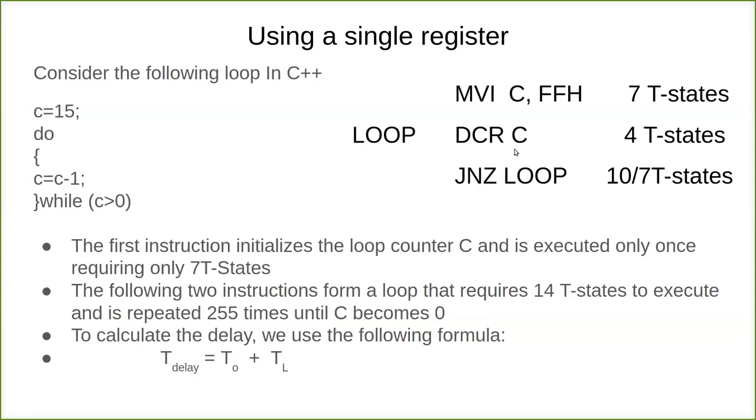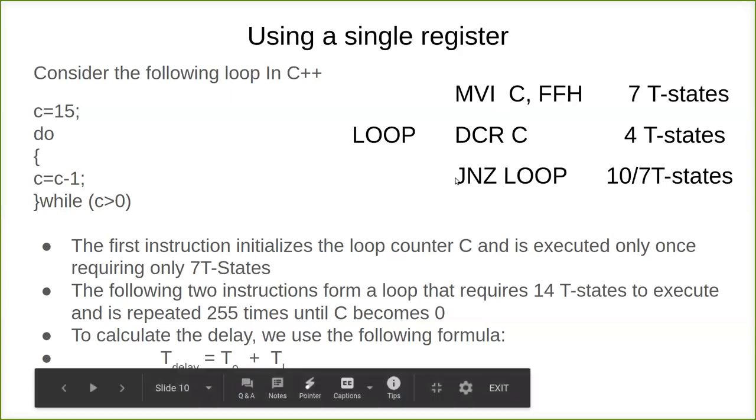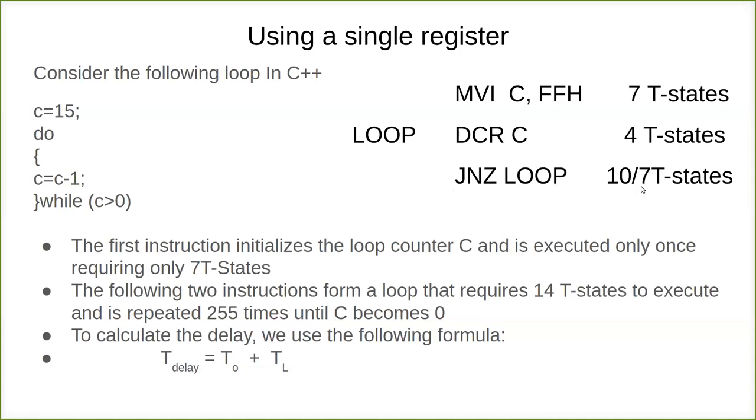But here we have 10 or 7. The last machine cycle will have only 3 T-states when it fails—when it becomes zero. It will not jump to this location, avoiding that execution and going to the next statement. That's why the last machine cycle is 7, while all other executions have 10 T-states.